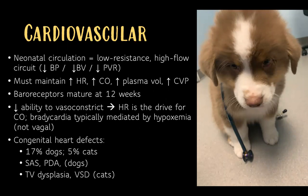Neonatal cardiovascular circulation is a low-resistance, high-flow circuit with decreased blood pressure, blood volume, and pulmonary vascular resistance. Maintaining heart rate, cardiac output, plasma volume, and central venous pressure is essential for good organ perfusion. Baroreceptors don't mature until 12 weeks of age, so patients younger than three months have a decreased ability to vasoconstrict — making heart rate the primary driver of cardiac output. Bradycardia in these patients is typically mediated by hypoxemia rather than vagal response.